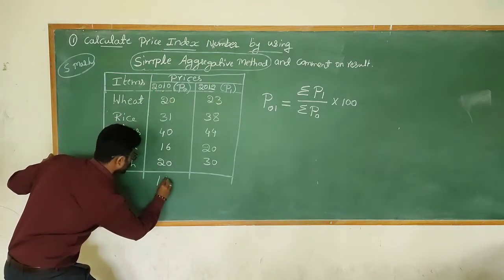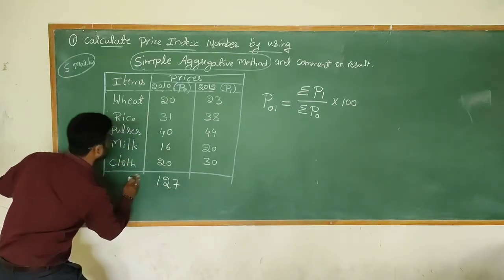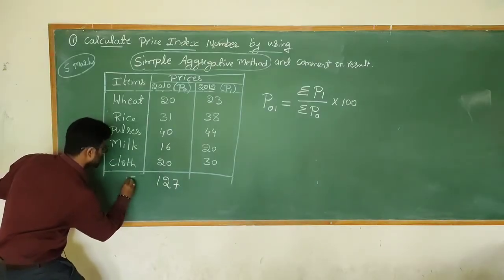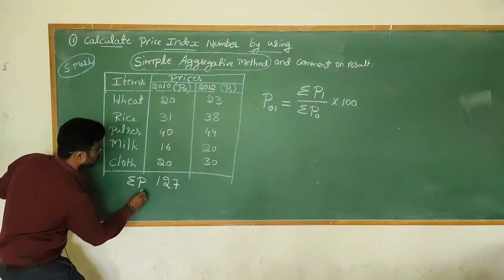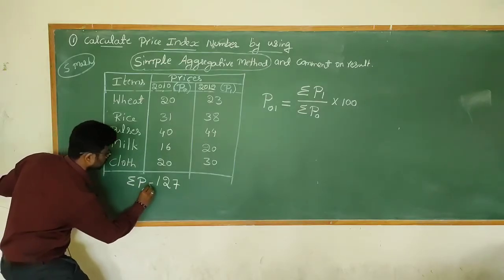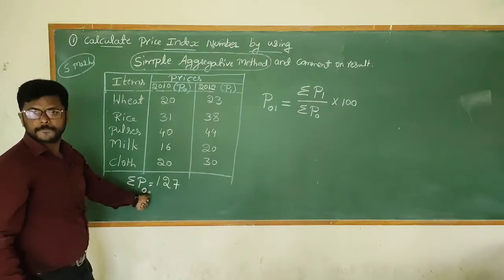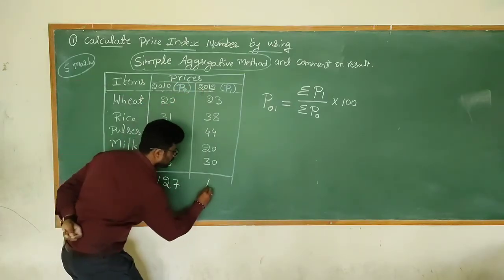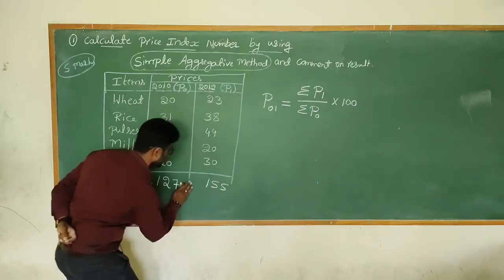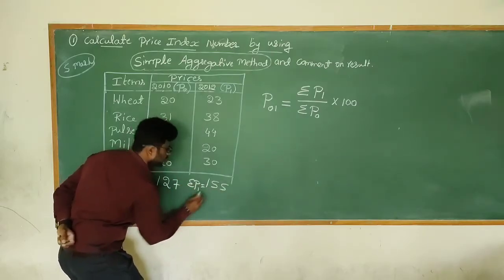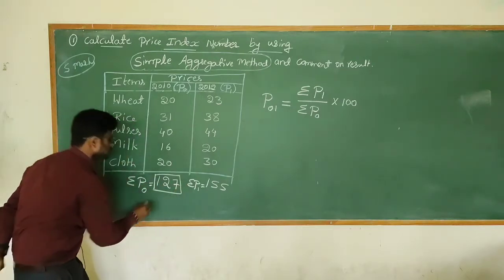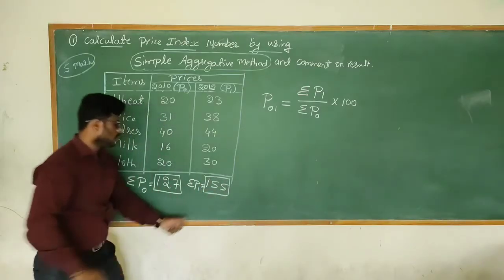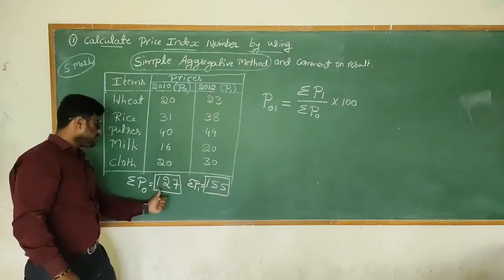We now compute the totals. If you add up all the 2010 base year prices, the total is 127 — this is sigma P₀. Next, adding up all the 2012 current year prices gives a total of 155 — this is sigma P₁. So the base year price total is 127 and the current year price total is 155.